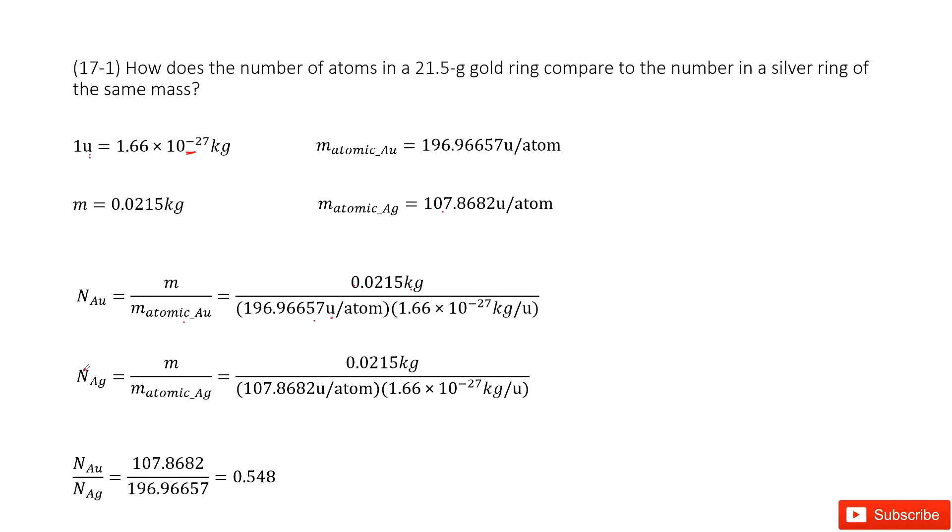Similarly, we can find the number for silver, exactly the same strategy. Use the total mass divided by the mass for one silver atom.